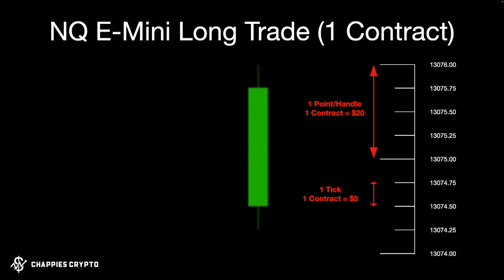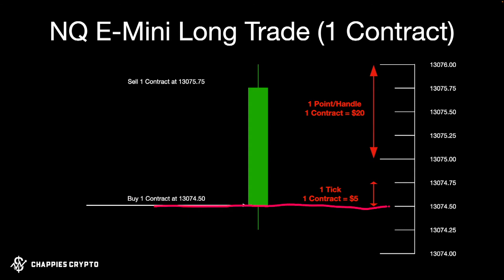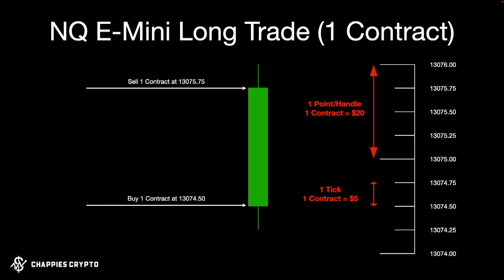Here's an example of what a candle looks like with price going up. Say we're going to buy one contract and we're lucky enough to identify the entry point. We purchased one contract at 13,074.5, expecting price to move up. The candle moves the way we expect, and we sell one contract at the higher level. The whole time we're risking one contract — each tick it moves down costs five dollars, so two ticks down is a ten dollar loss.